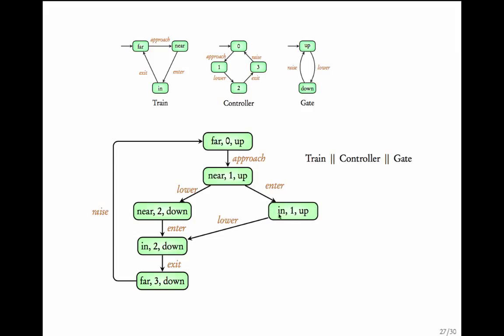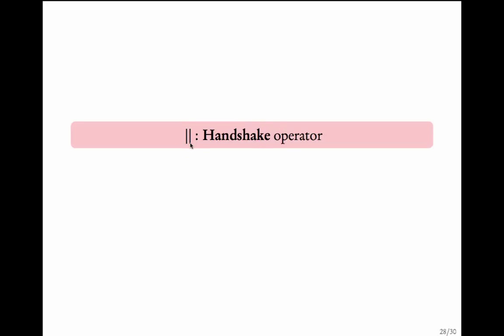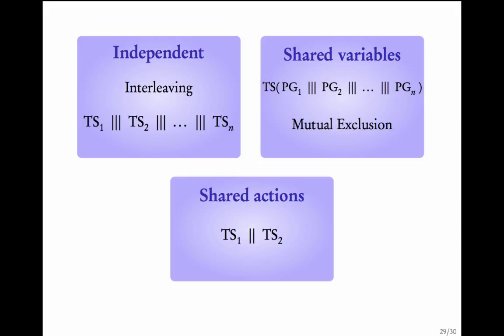Similarly, we can finish this transition system. Note that the state in, one, up describes the fact that the train is inside the crossing and the gate is still up — this is not a safe state. Therefore, this simple design has a major flaw. We will see later that we would need to incorporate timing details into the transition system. For now, understand that this transition system represents the handshake composition of train, controller, and gate, denoted using the handshake operator with two lines.